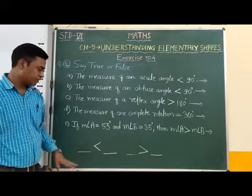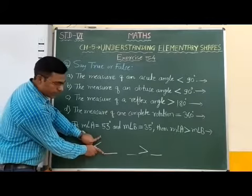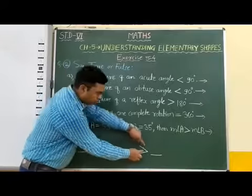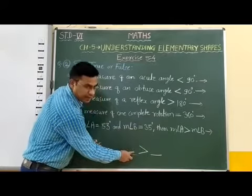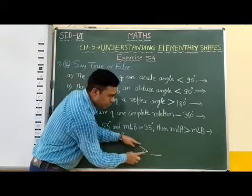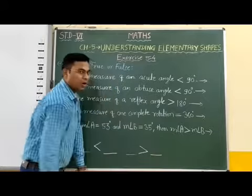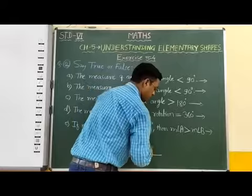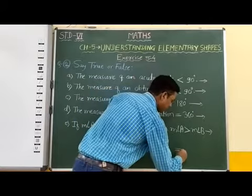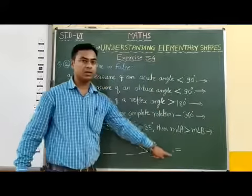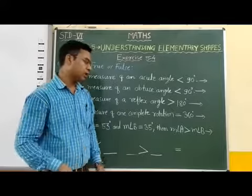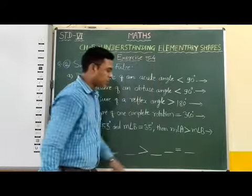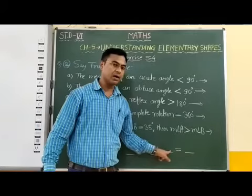In a simple way, we can say that the open part is greater and the closed part is smaller. Now, the next symbol is the equals sign. The meaning of this symbol is equal — the left side part and the right side part are both equal.